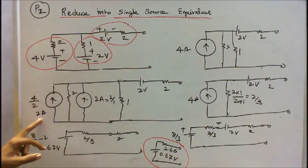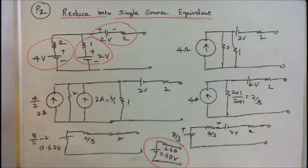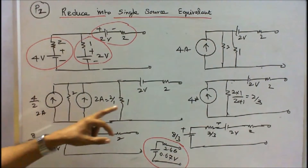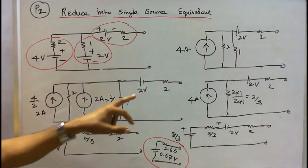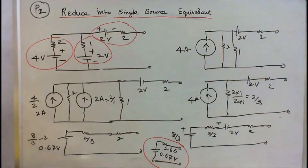Therefore 2 plus 2 is equal to 4 amps. These 2 resistors are connected in parallel. And this is 2 volts with 2 ohms remaining.